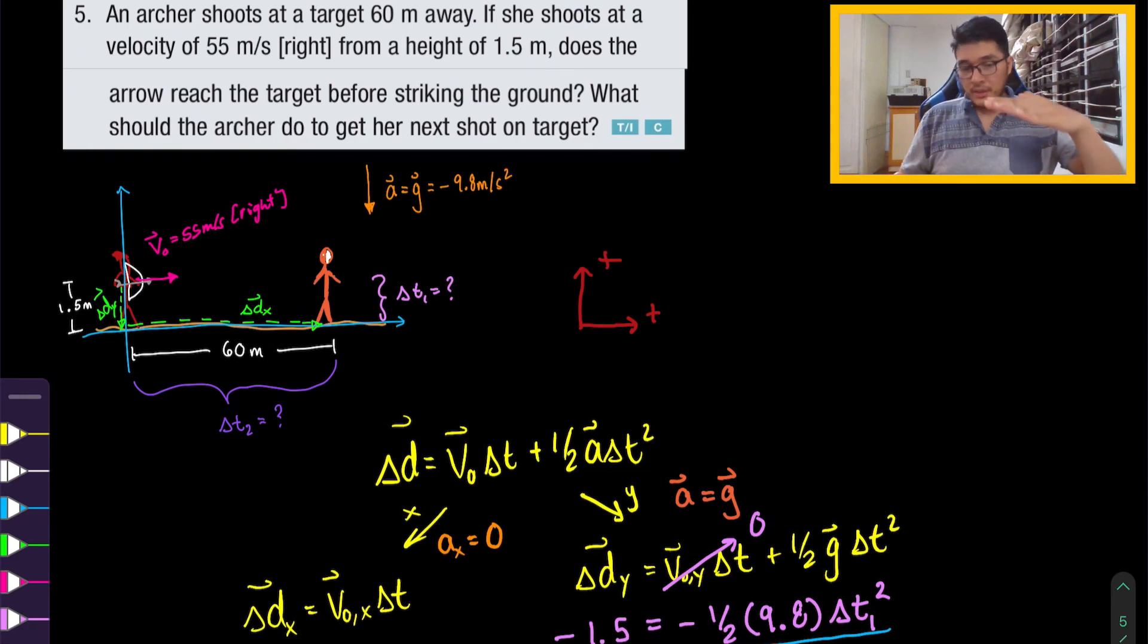Well, what she can do, she can increase the angle to not be horizontal. She can increase the angle. Ideally, the best angle if you want to go the furthest away would be 45 degrees. Or she can try to make it have a larger launching velocity, so faster than 55 meters per second. Or a combination of both. So you could launch it faster than 55 meters per second at an angle. And again, the best angle to go as far away as possible is the 45 degree angle.